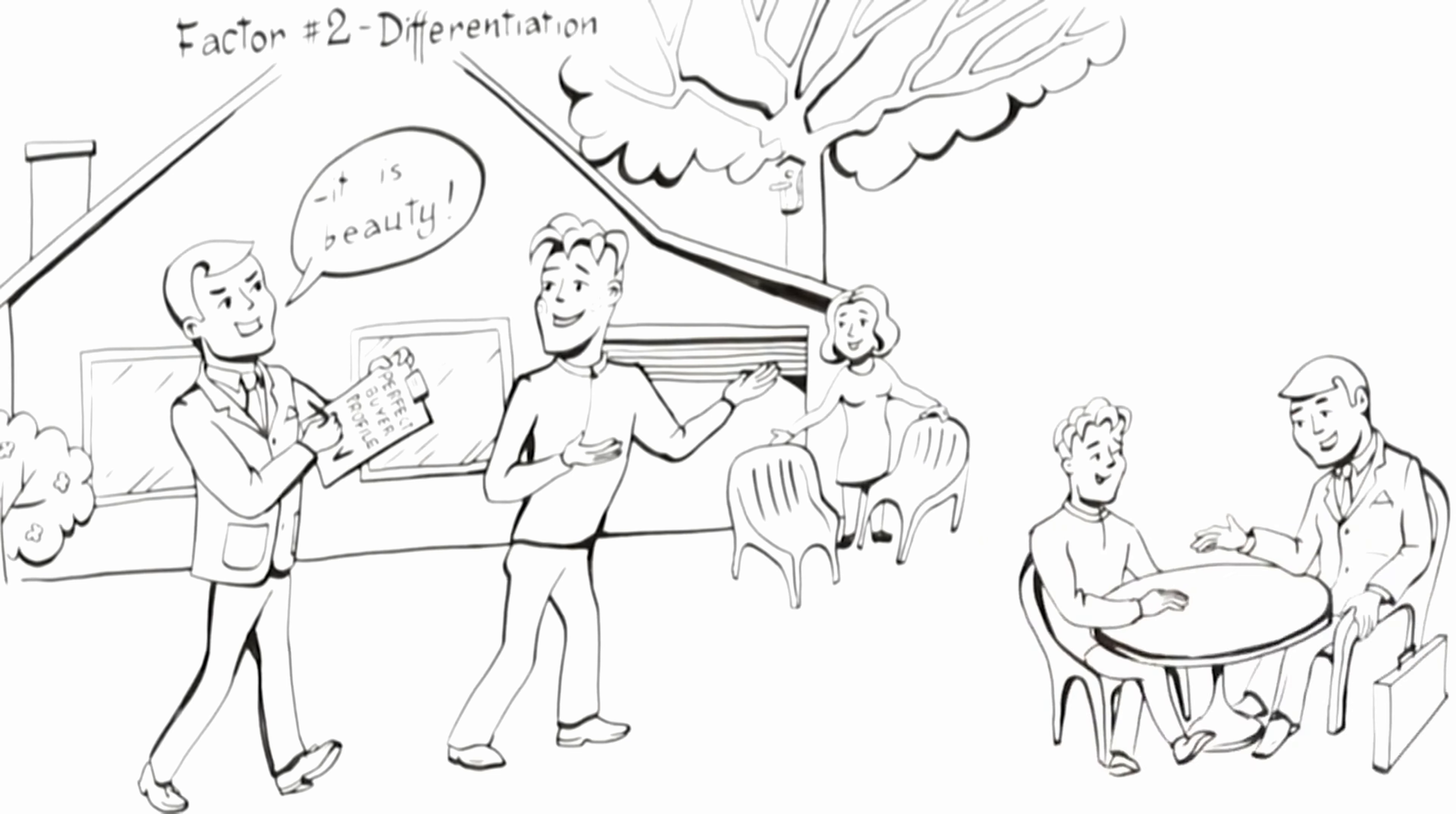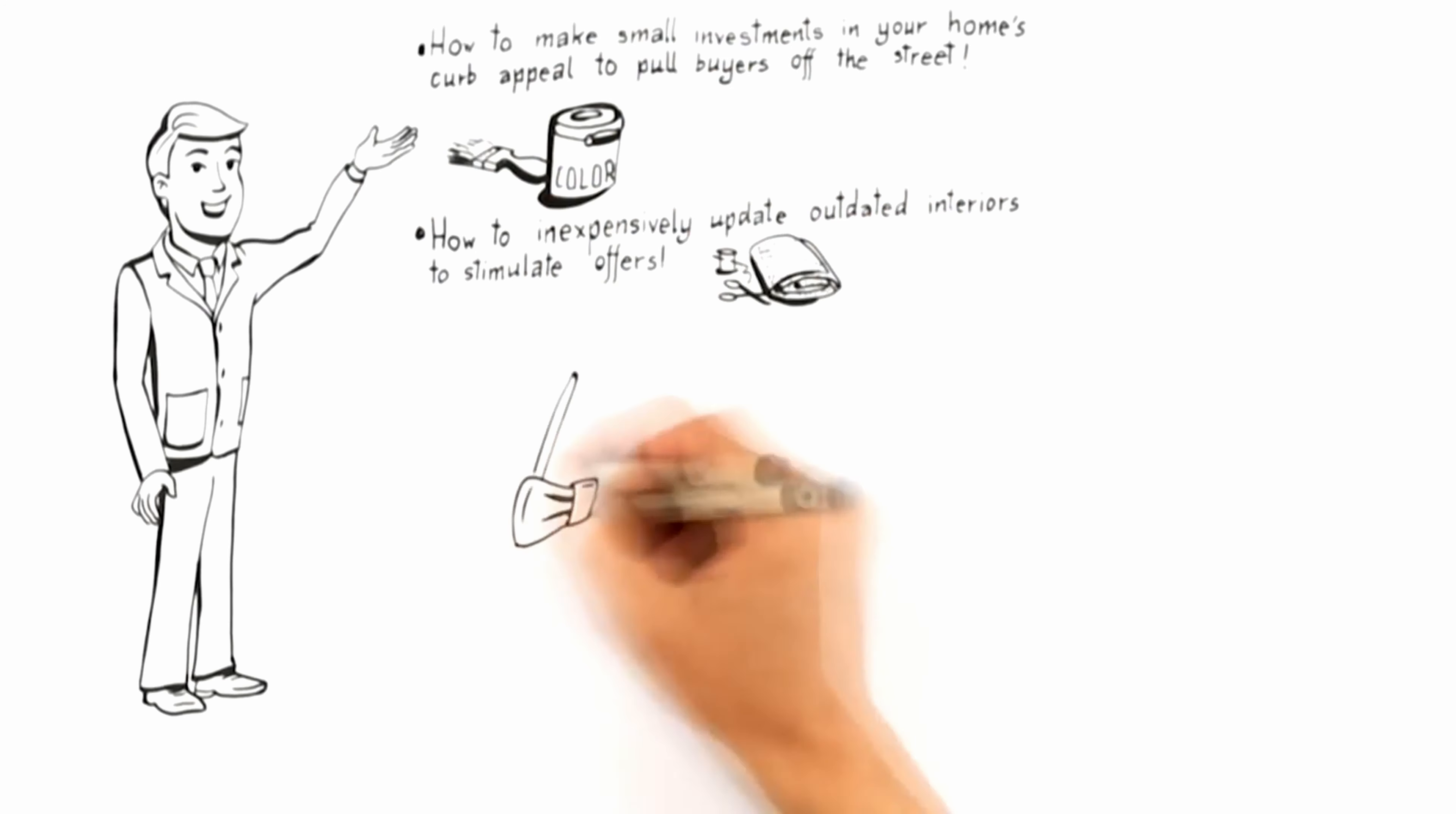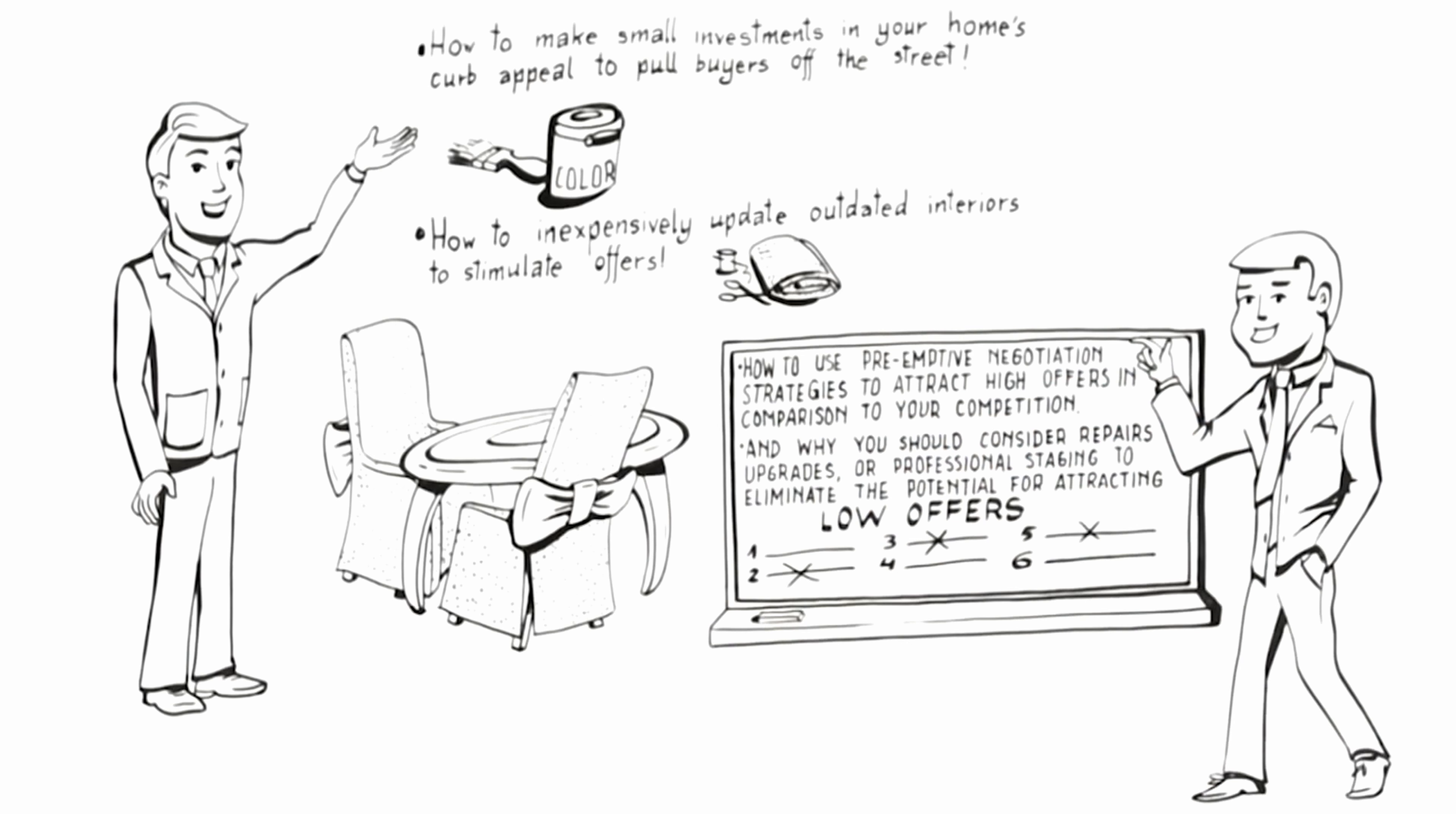As you'll notice, the key focus here is not on past market sales, but what is likely to attract a top paying buyer in today's market. This means the advice you should receive must include how to make small investments in your home's curb appeal to pull buyers off the street, how to inexpensively update outdated interiors to stimulate offers, how to use preemptive negotiation strategies to attract high offers in comparison to your competition, and why you should consider repairs, upgrades, or professional staging to eliminate the potential for attracting low offers.